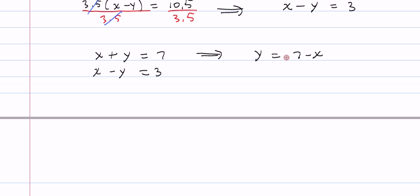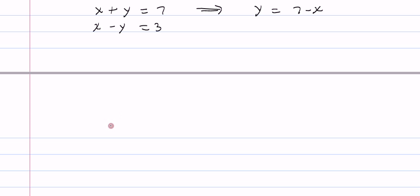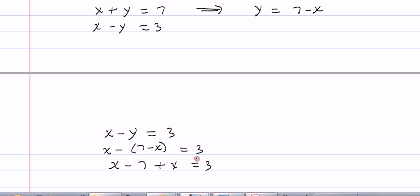Take that expression for y and plug it into the second equation. So I get x minus y is equal to 3. That's going to become x minus (7 minus x) is equal to 3. Carry the negative through the parentheses. Negative goes all the way through. Negative times negative makes it a plus x is equal to 3.